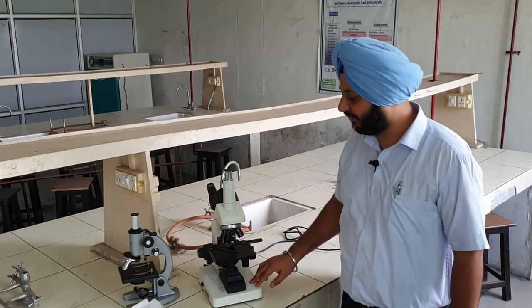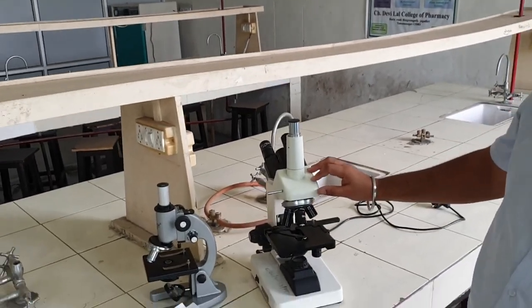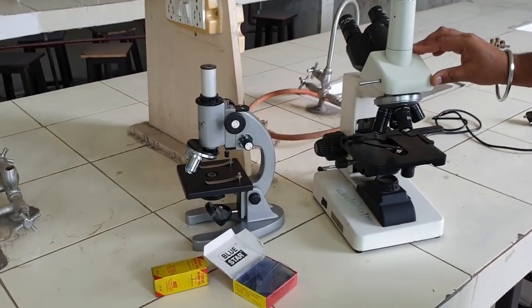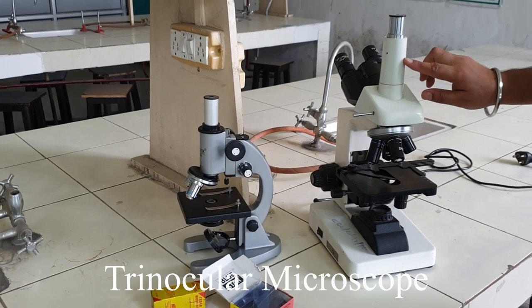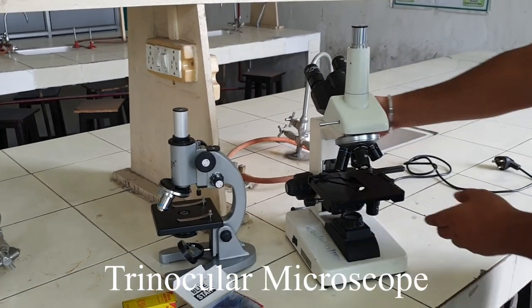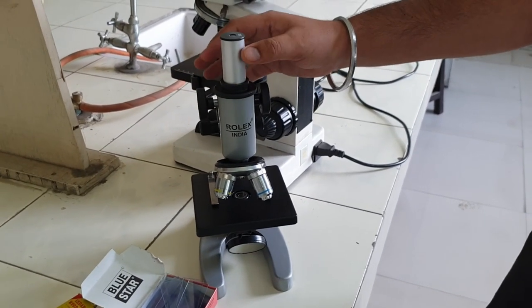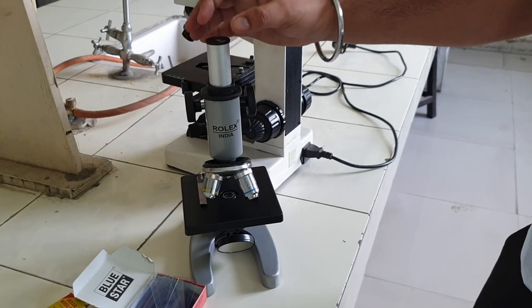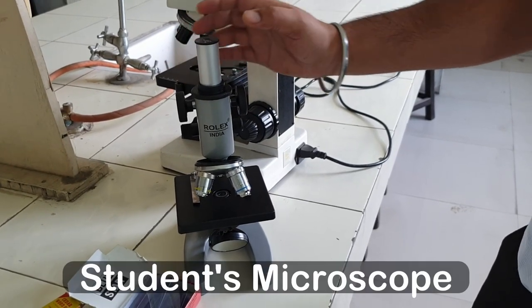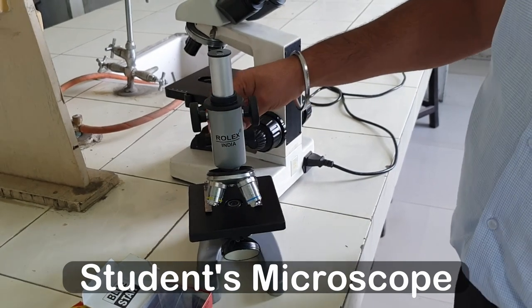Today we will discuss what is a microscope. There are two microscopes here. One is a trinocular microscope. It is called trinocular because it has three eyepieces. One eyepiece is here and the students use the other. There is a single eyepiece that you can view from one area. Now we will discuss the various parts of the student microscope.